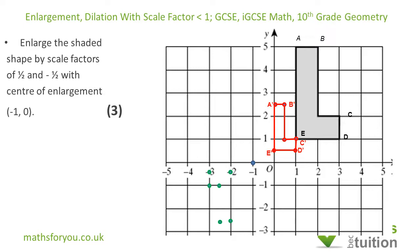For B prime prime — from the center of enlargement, B is 3 to the right and 5 up, so with scale factor minus one half I move one and a half to the left and two and a half down. B prime prime is there.